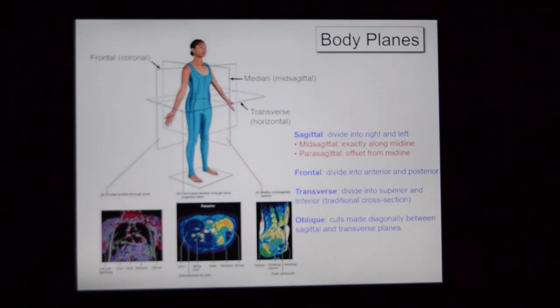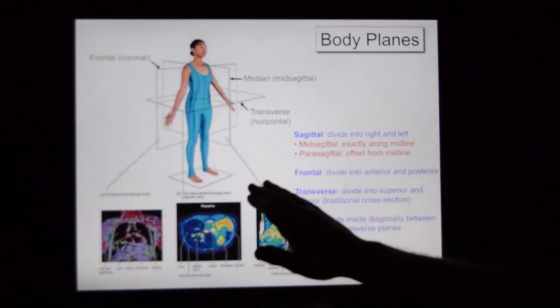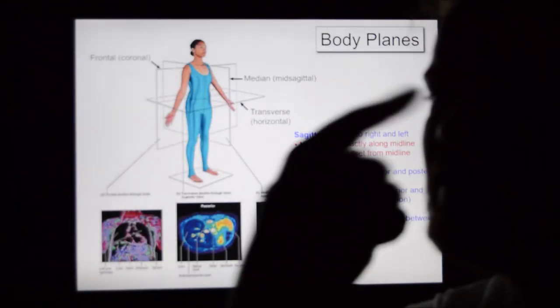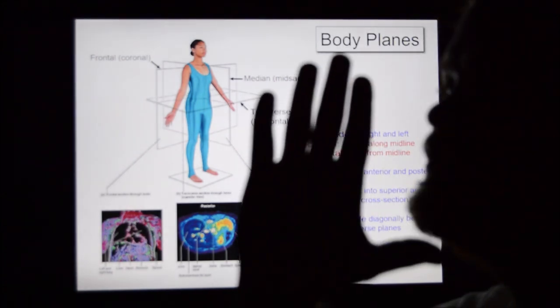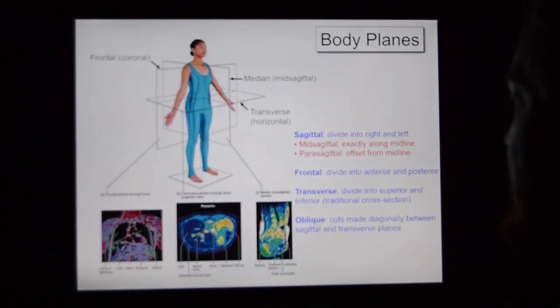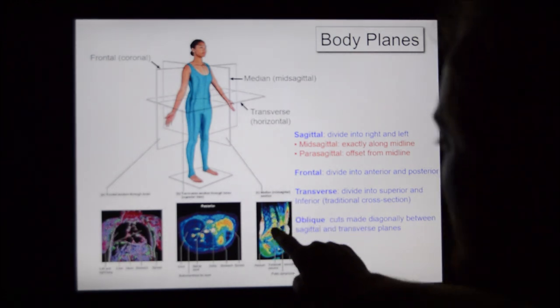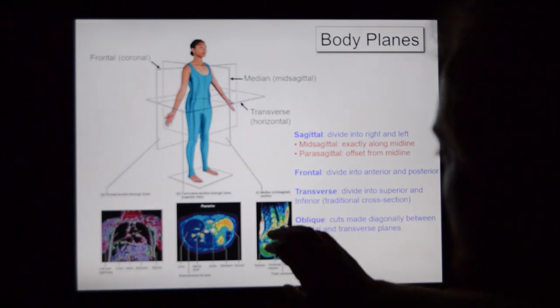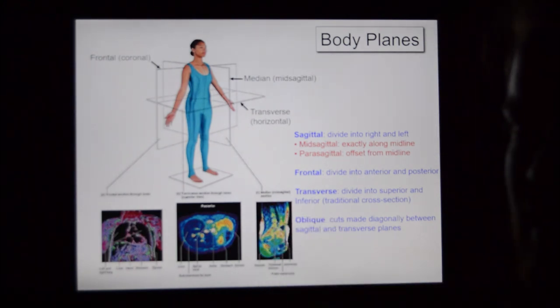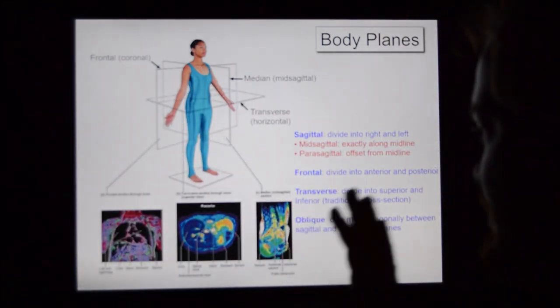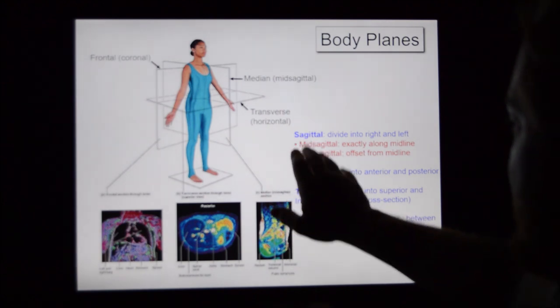Body planes: we have sagittal, frontal, transverse, and oblique. A sagittal section—you got to think about this as coming in through the nose and taking the whole left side of your body off. You can see here the outline of the spinal cord. This is a CT scan, a sagittal section. You're looking at something, taking one side off of it so you can look in.